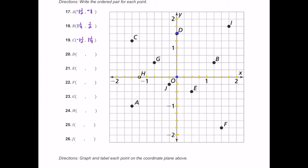For D, it's up on the positive y-axis, so we're not moving left or right — we put zero for the x value. How far up are we moving? It looks like we're moving up one and a half. So the ordered pair is zero comma one and one half.